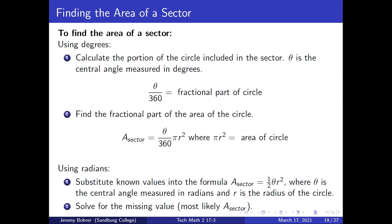To find the area of a sector using degrees, first calculate the portion of the circle included in the sector. Theta is the central angle measured in degrees, so theta over 360 is the fractional part of the circle. Then find the fractional part of the area of the circle. The area of a sector is equal to theta over 360 times pi r squared, where pi r squared is equal to the area of the circle.